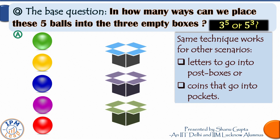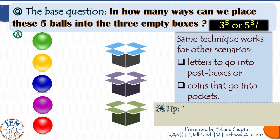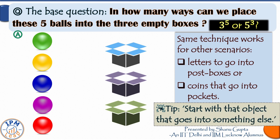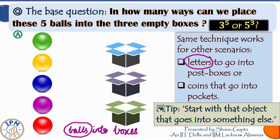You have two choices for the answer: three raised to the power five, or five raised to the power three — which one will you pick? Here is one hint which will help you in all such questions: you must always start with the object that goes into something else. Like here, balls go into boxes and not the other way round, so we start with balls. Similarly, letters go into post boxes so we start with letters, and coins go into pockets so we start with coins.